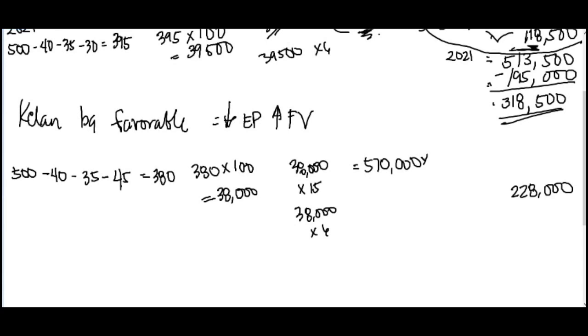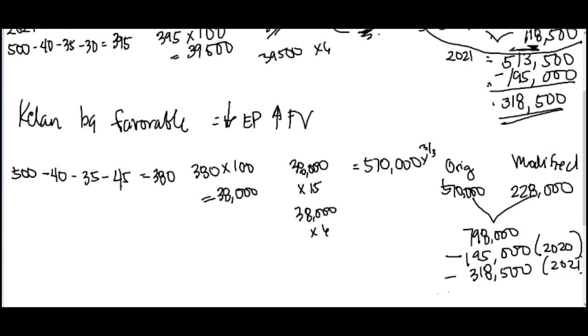Actually, that's it. Because this is times 3 over 3. So 570 is the total current, total compensation expense. When you add the two, you have 798,000. So this is your original, this is your modified. So what do we do? Subtract the previous. Subtract what you recognized in prior years, 195,000. This is in 2020. Then subtract the compensation you recognized in 2021. So for 2022, what you'll recognize is only 284,500.